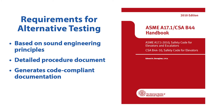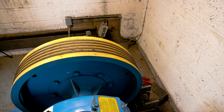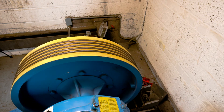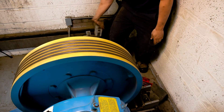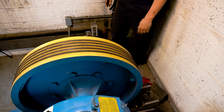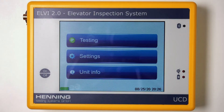For a complete listing of A17.1 requirements for alternative testing, consult Section 8.6.11.10. All of the standard steps of the Category 5 testing process apply. The elevator service company must complete all required checks not covered by the LV2 system, including but not limited to inspection and testing of the overspeed governor and visual inspection and cleaning of safeties. It is the responsibility of the company performing the tests to know and follow all applicable requirements.